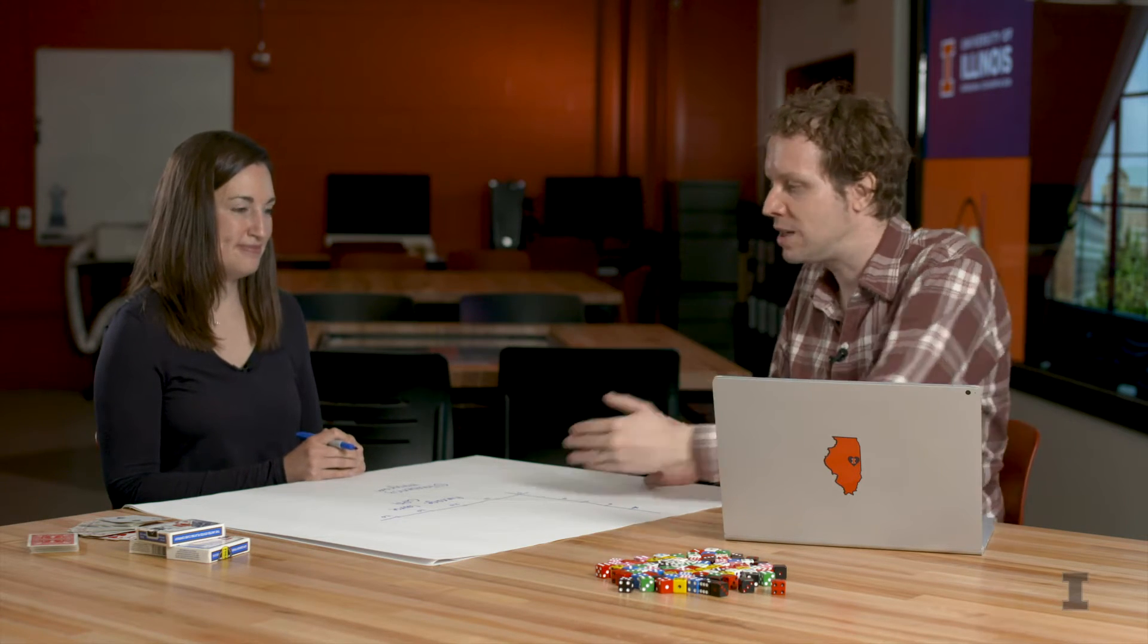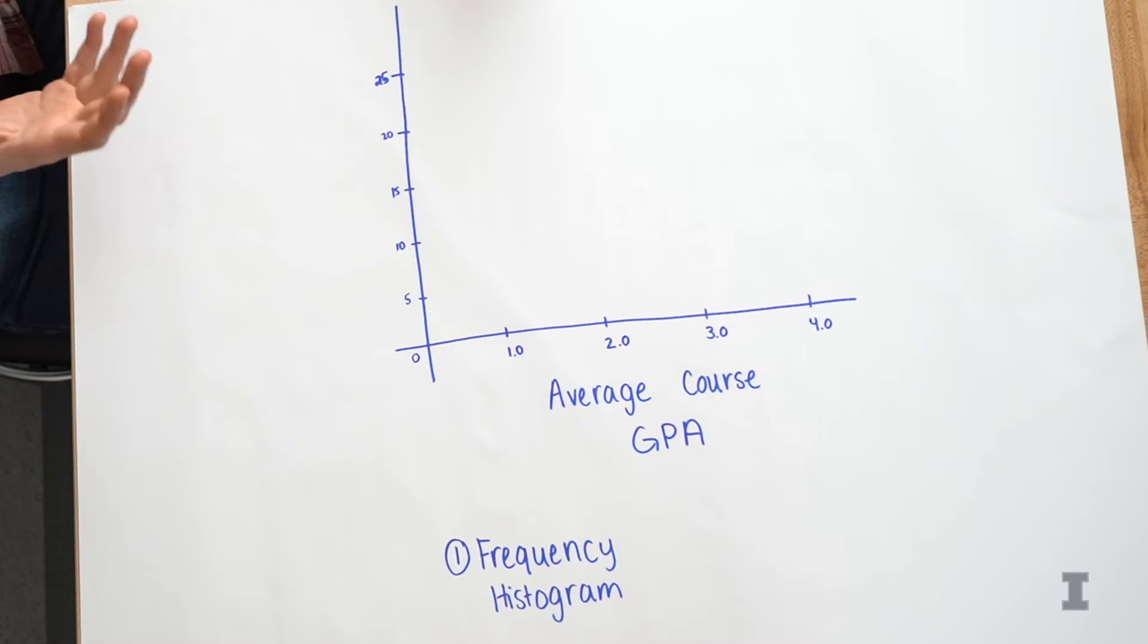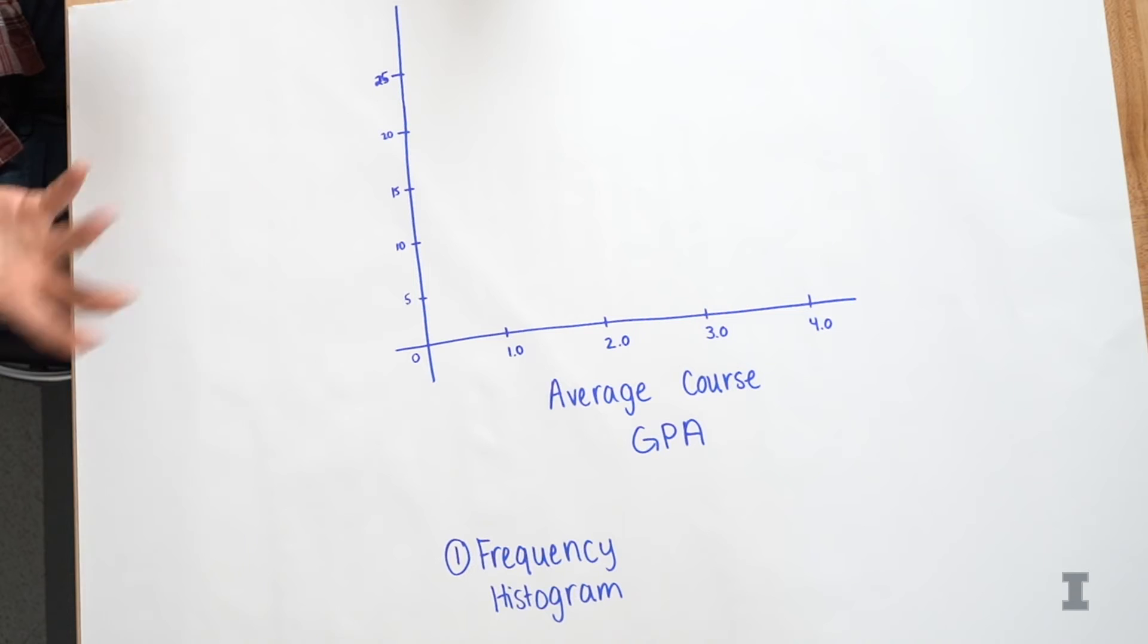So one great thing about histograms is unlike a bar chart or some other chart, histograms are going to group usually continuous data together. So you can imagine in one course, somebody might have an average course GPA of 3.27. Some other course may have an average course GPA of 3.37.